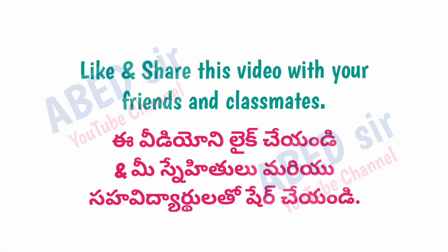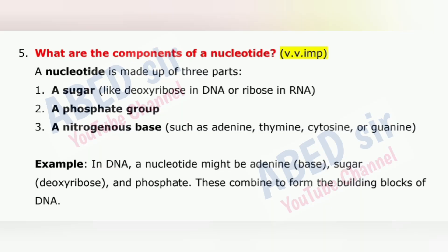Next important question is 5: What are the components of a nucleotide? A nucleotide is made up of three parts: 1. A sugar, like deoxyribose in DNA or ribose in RNA. 2. A phosphate group. 3. A nitrogenous base, such as adenine, thymine, cytosine, or guanine. For example, in DNA, a nucleotide might consist of adenine (base), deoxyribose (sugar), and phosphate. These combine to form the building blocks of DNA.